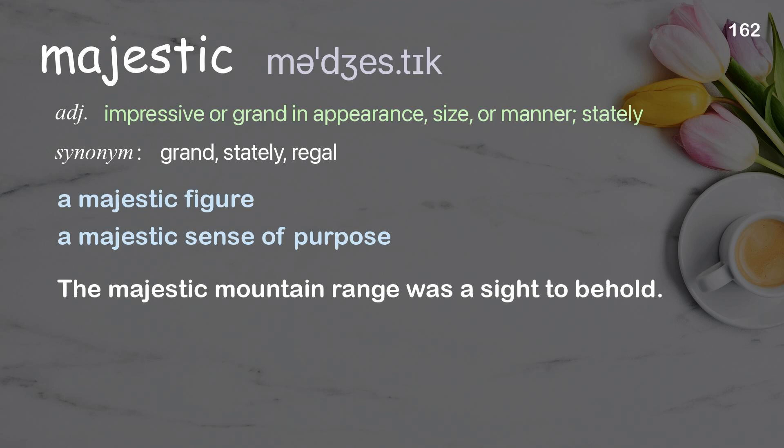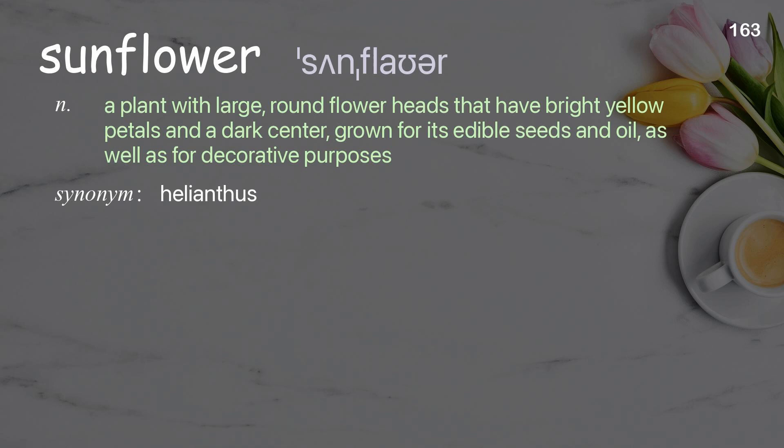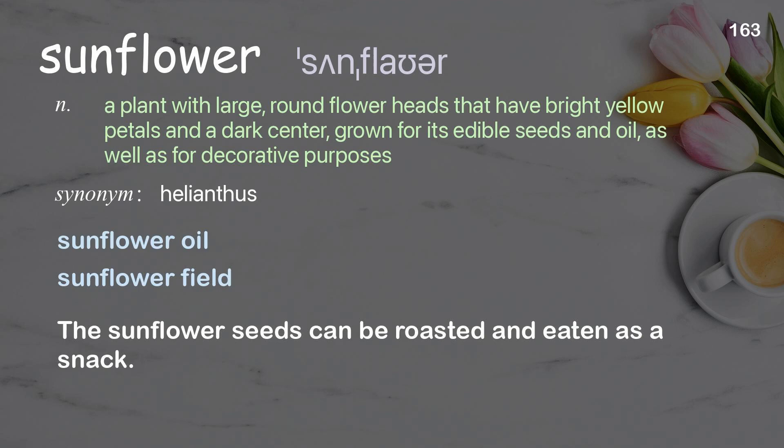Sunflower: a plant with large round flower heads that have bright yellow petals and a dark center, grown for its edible seeds and oil as well as for decorative purposes. Examples: sunflower oil, sunflower field. The sunflower seeds can be roasted and eaten as a snack.